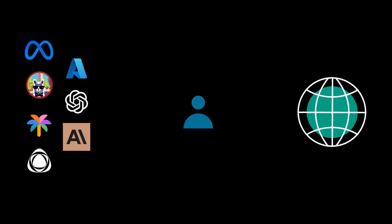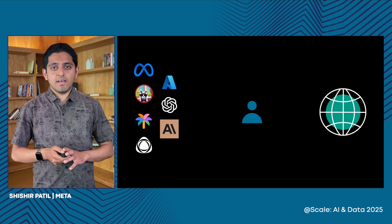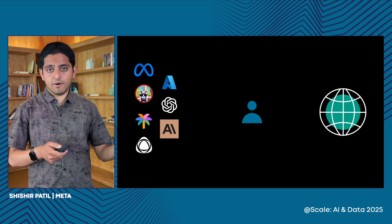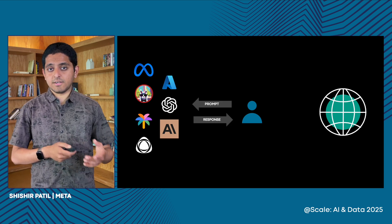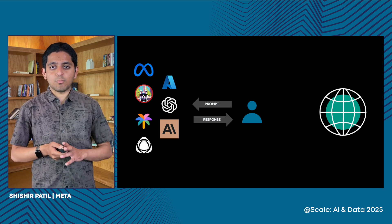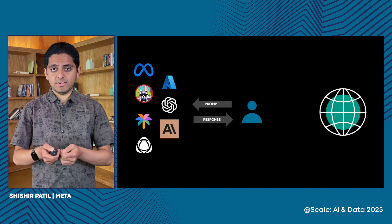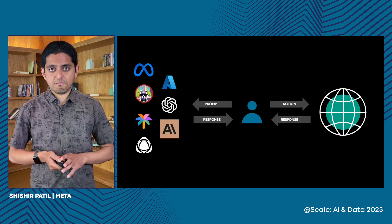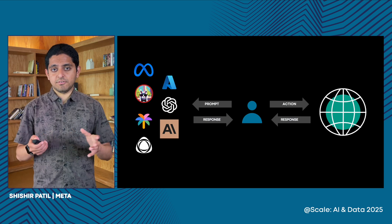Let us begin by looking at how we interact with LLMs today. On the left-hand side, you have all the different LLMs that some of you might use frequently. I have shown you as the user at the center, and the whole digital world, which you can access through your different APIs, tools, and services on the right-hand side. If you were to capture one interaction today, you would go to Meta.ai or your favorite chatbot, prompt the LLM, and get a response. While I have shown this as a single-shot interaction, this could actually be multiple back and forths. But once you get the response, it's up to you as the user to take this response, perform an action on the digital world, and then observe the response.